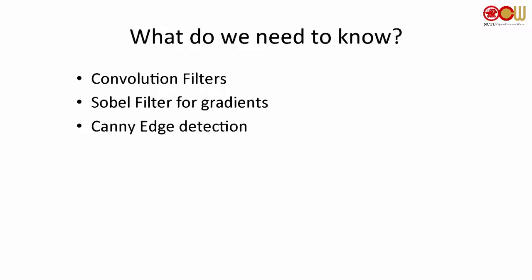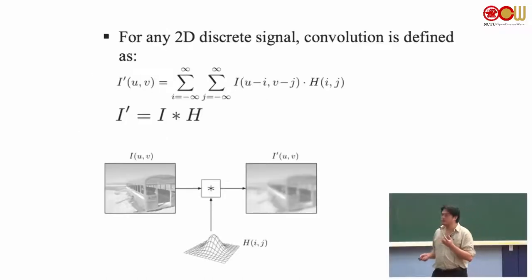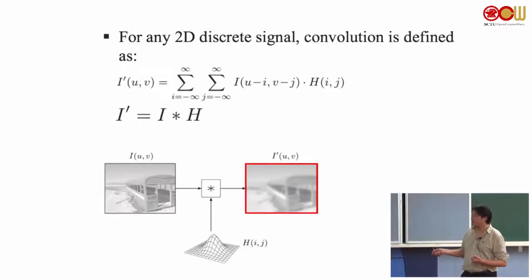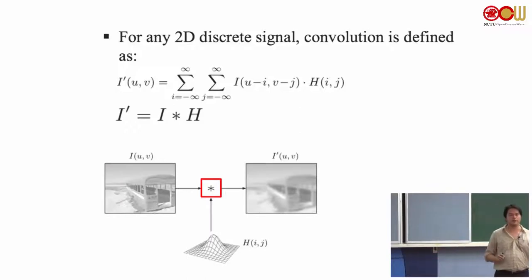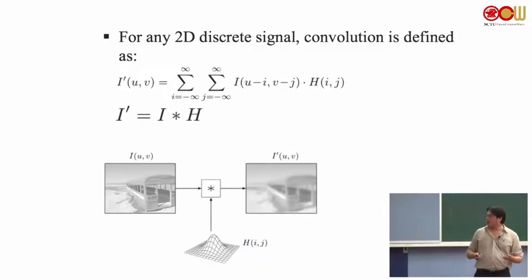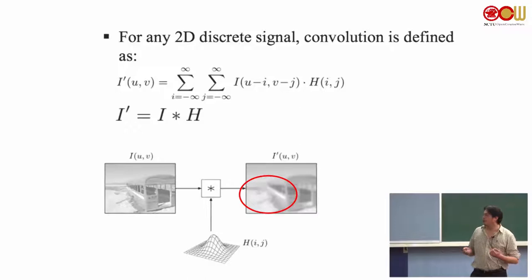Before Canny, we want to cover a little bit about the convolution filter and the Sobel filter as an introduction. Essentially, this is the input image I, where I is typically the intensity value. This is the output, and the symbol you see here is the operator for convolution. A filter may look like a small matrix. There are several different types of convolution filters — they can be used to smooth the image, make it blurry, or find the edges.